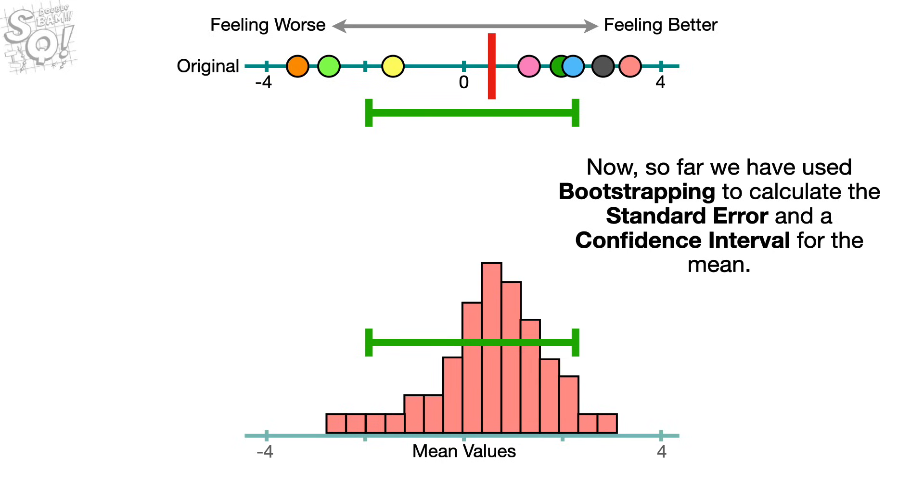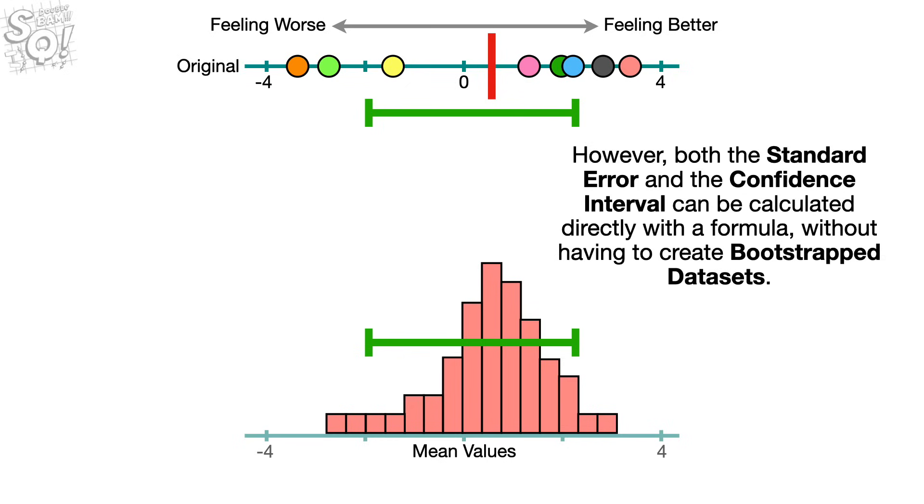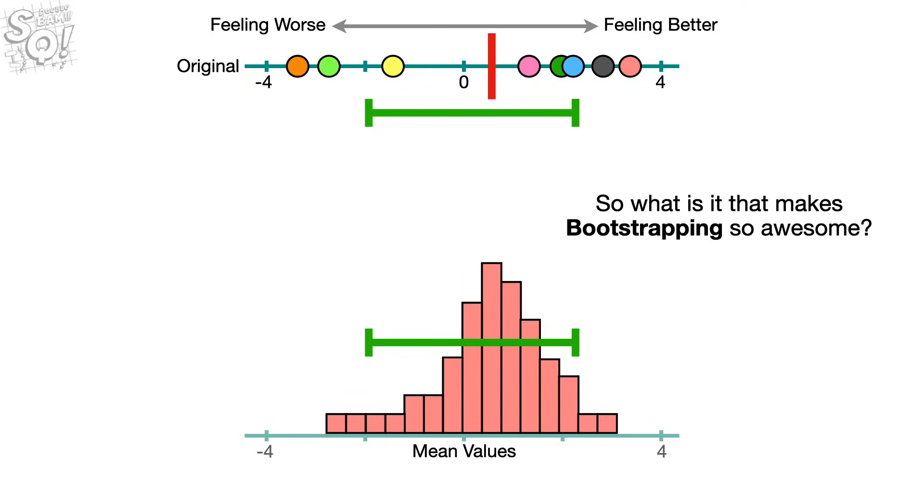Now, so far we have used bootstrapping to calculate the standard error and a confidence interval for the mean. However, both the standard error and the confidence interval can be calculated directly with a formula, without having to create bootstrapped datasets. So, what is it that makes bootstrapping so awesome?